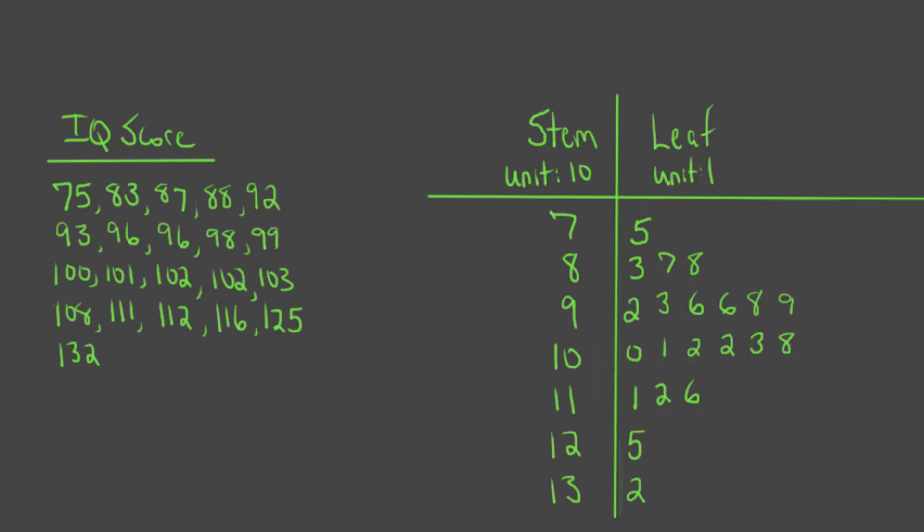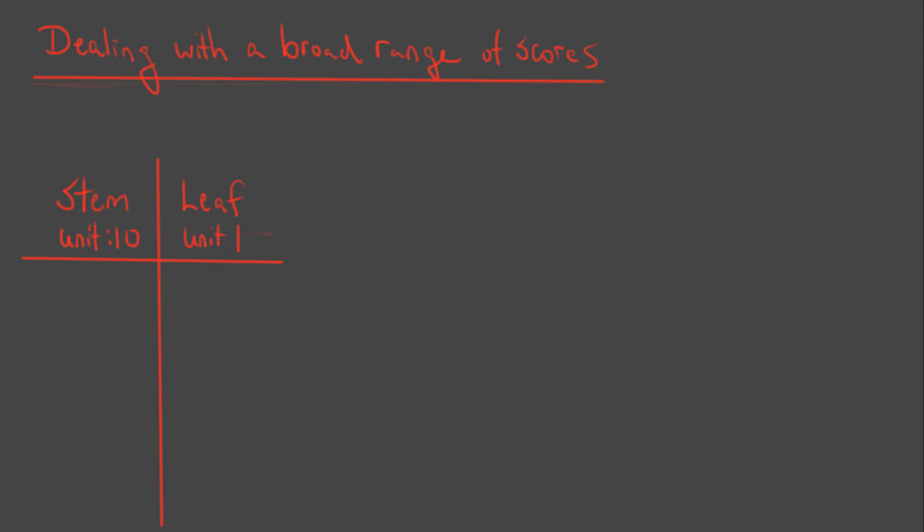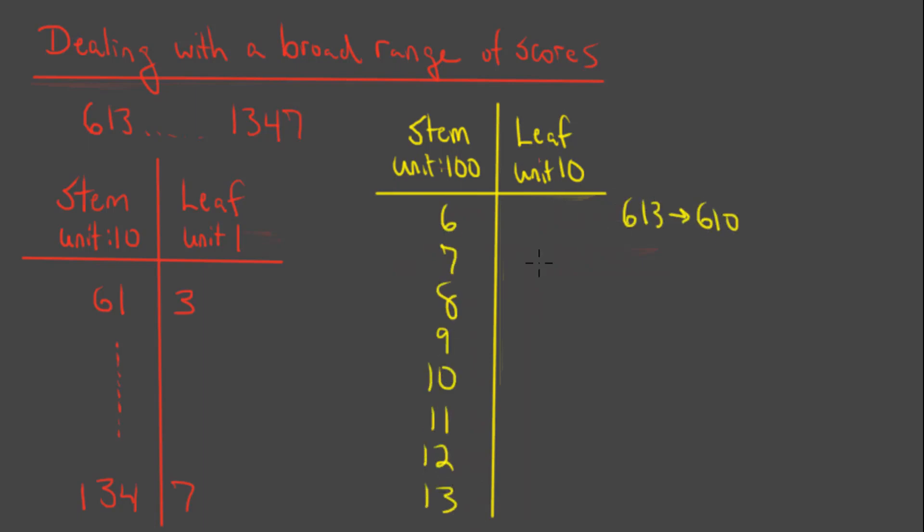This does raise a limitation of the stem and leaf plot, which is that even though we can have stems with more than one digit, the leaf is generally a single digit, and we can't have gaps in the units between our stems and our leaves. That means it's difficult to display a very broad range of numbers. If we had a very large range of scores, say from 613 to 1347, it would become impractical to use units of tens for the stems, because we'd need so many rows. If we use units of 100 for the stem, then we have to use units of 10 for the leaves, and that means we have to round our values. So 613 could be rounded to 610, and then represented by a stem of 600s and a leaf of 1 for 10. And 1238 could be rounded to 1240, and then represented by a stem of 12 hundreds and a leaf of 4 for 40. Now we lose some precision, and we'd have to decide if this is appropriate for the data that we have.